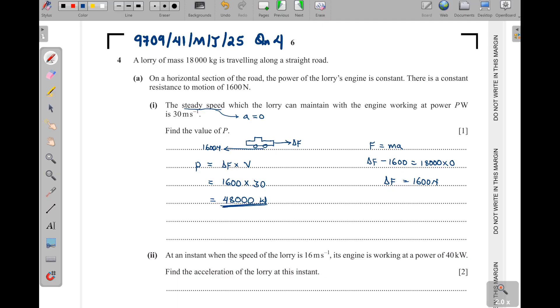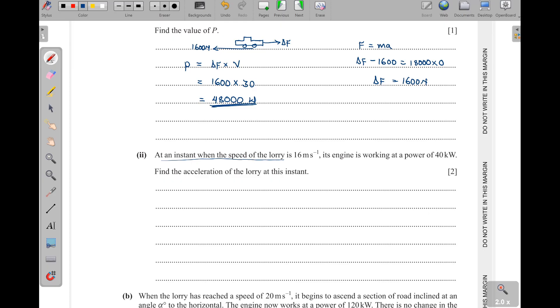Then part two: at an instant when the speed of the lorry is 16 meters per second, its engine is working at a power of 40 kilowatts. Find the acceleration of the lorry at this instant. Now of course we need to find the new driving force. Since we know that power is equal to the driving force times the velocity, so the new driving force is going to be equal to power, which is now 40 kilowatts, and here we are using watts, so it will be 40,000, then divide by the speed, which is 16.